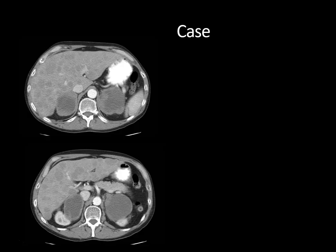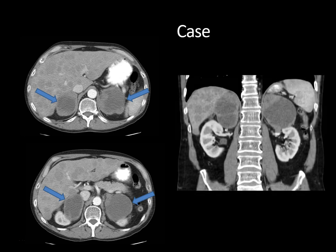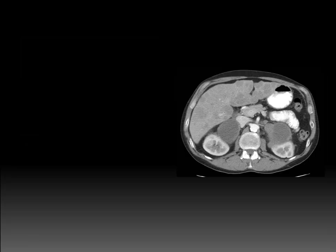Starting with a case. This was a CT scan of the abdomen with intravenous contrast through the level of the adrenal glands. You can see these two large mixed cystic and solid masses in the region of the adrenal glands bilaterally. On the coronal reformatted image, you get a sense of their large size and the mass effect they exert against the underlying kidneys. There are also multiple ill-defined hepatic metastases.